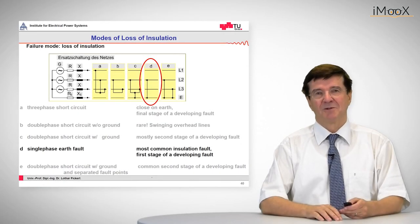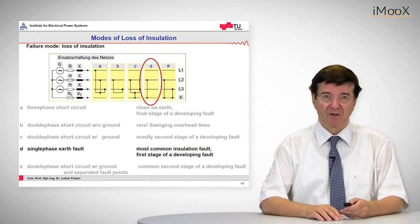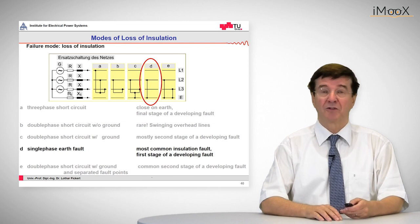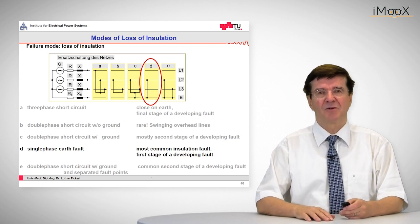The last type of fault which I want to analyze with you is the line to ground fault, also commonly known as ground fault or earth fault. In this case one phase is connected to ground. So this is, by the way, the most common insulation fault or the first stage of a developing fault.